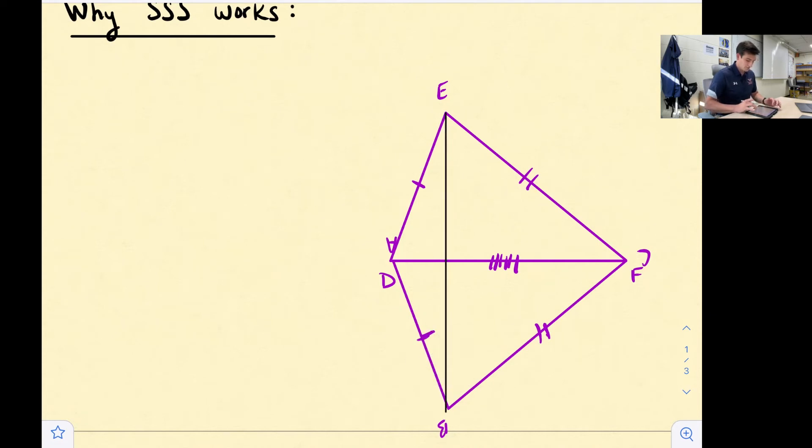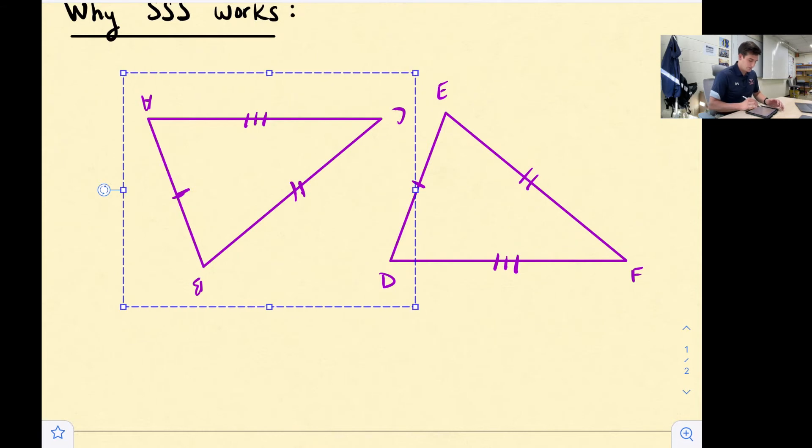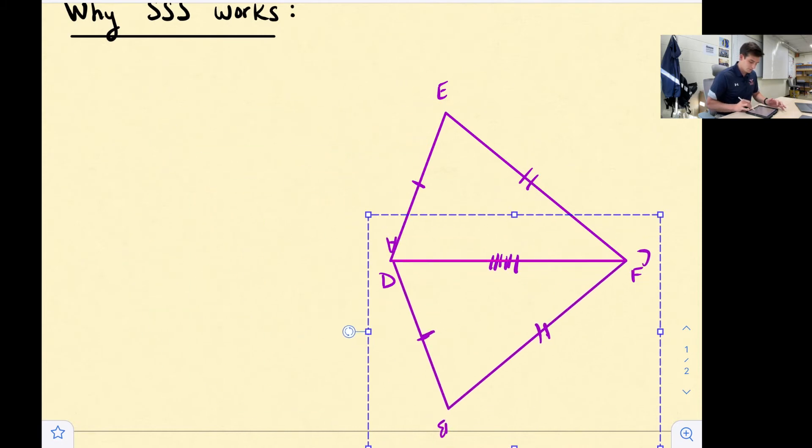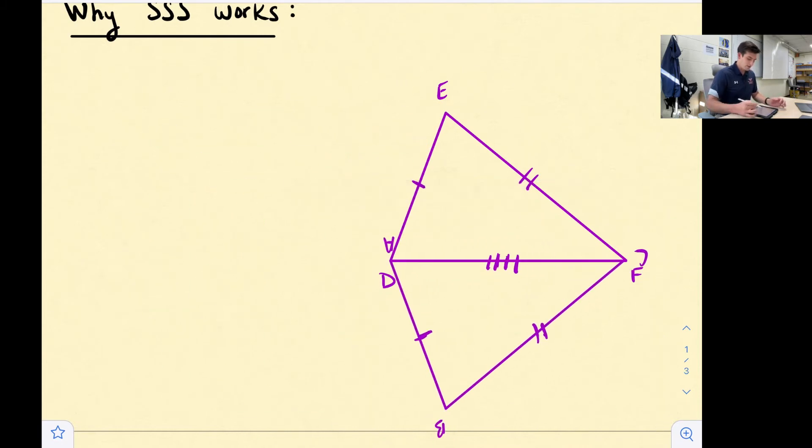That goes through our vertices here. Let me start over and put it a little bit better. All right, so now we can draw an auxiliary line through these two vertices to help us make this make sense. Now what we've done is we've created basically two separate triangles. We have triangle DEF, which is this triangle right here that I've highlighted, and then we have triangle BEF.